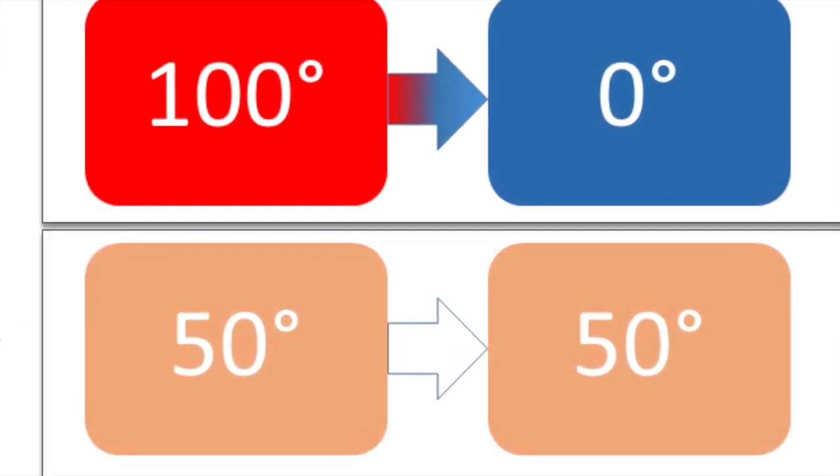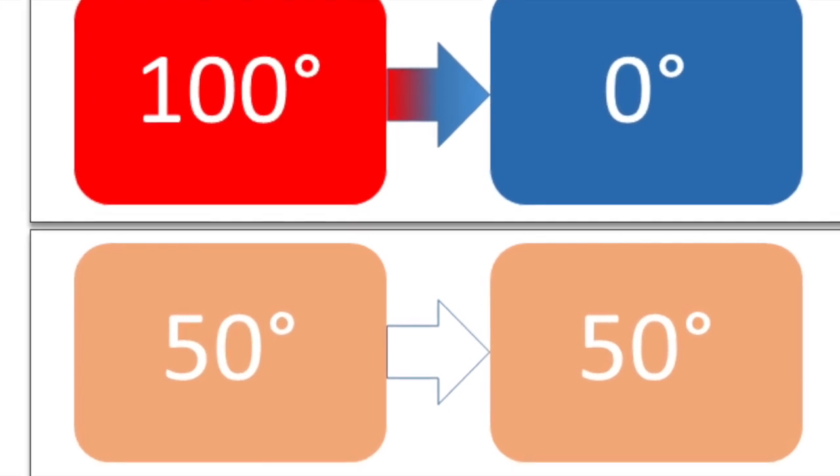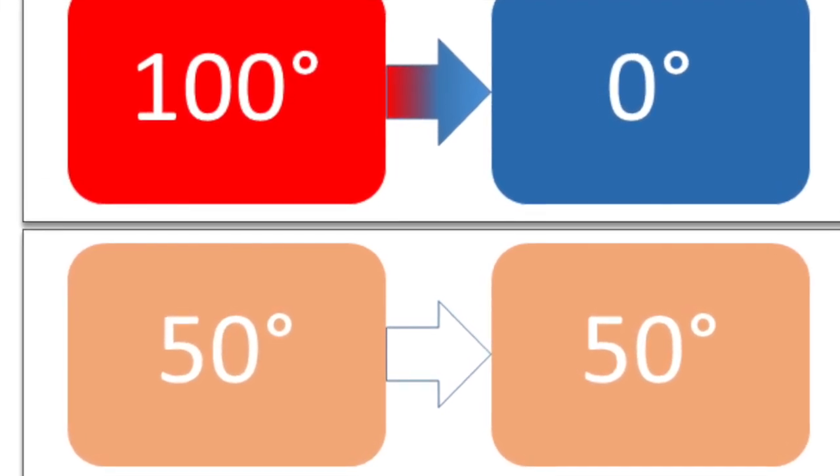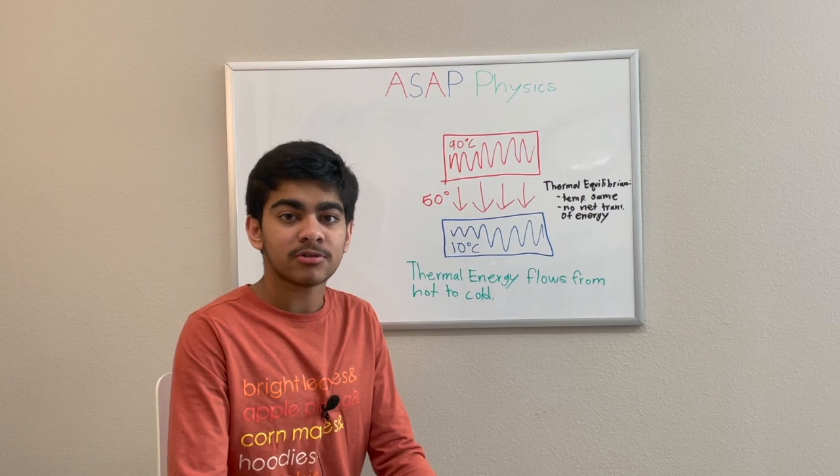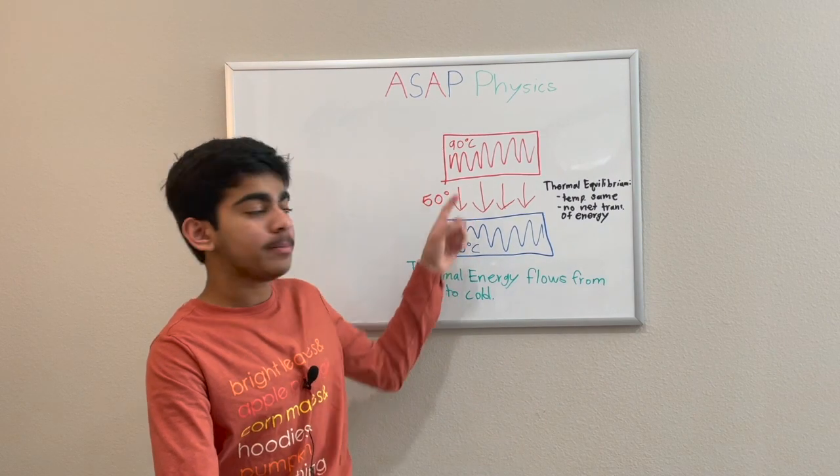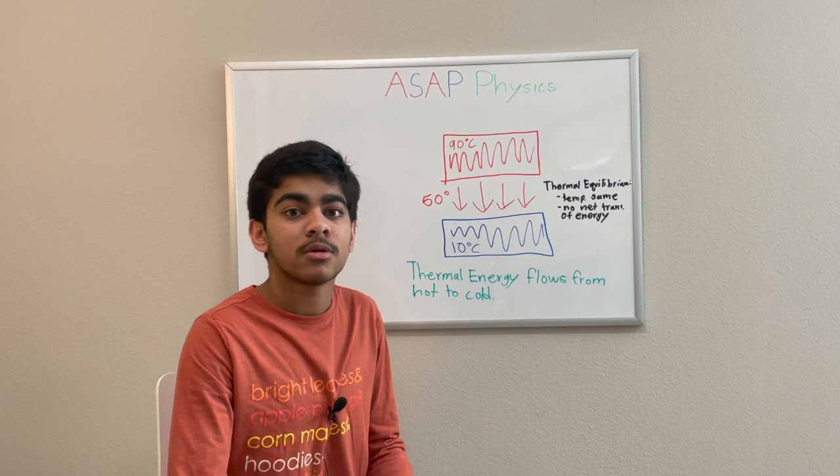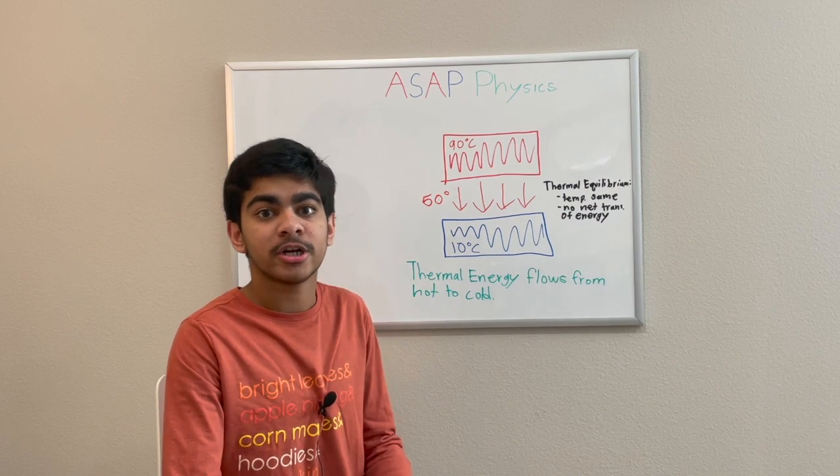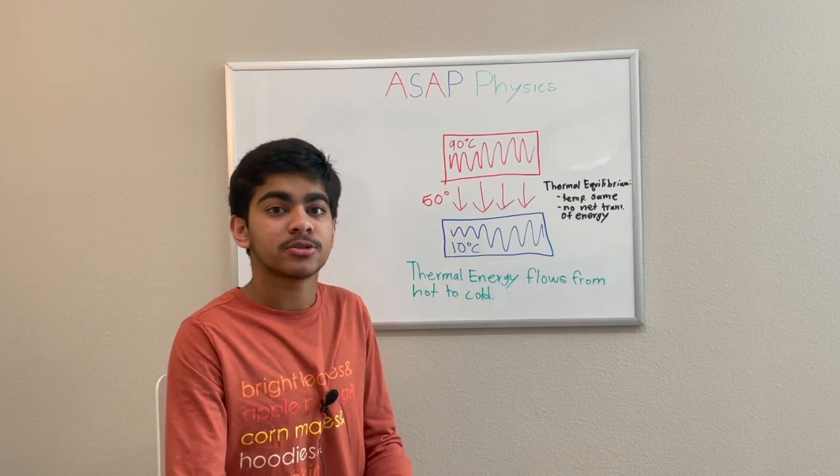In thermal equilibrium, we say that the temperatures are the same in both objects and that there's no net transfer of energy. The zeroth law of thermodynamics states that no matter what material these two objects are, hot objects will always give off thermal energy to colder objects until they reach thermal equilibrium.